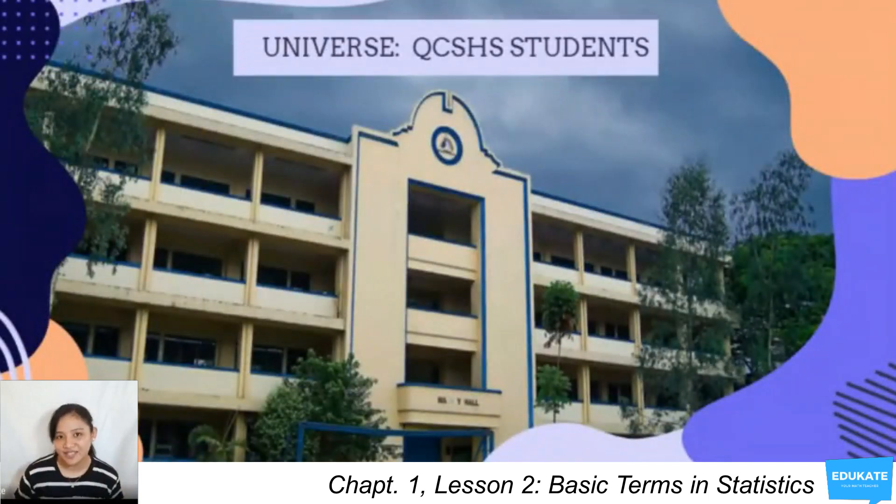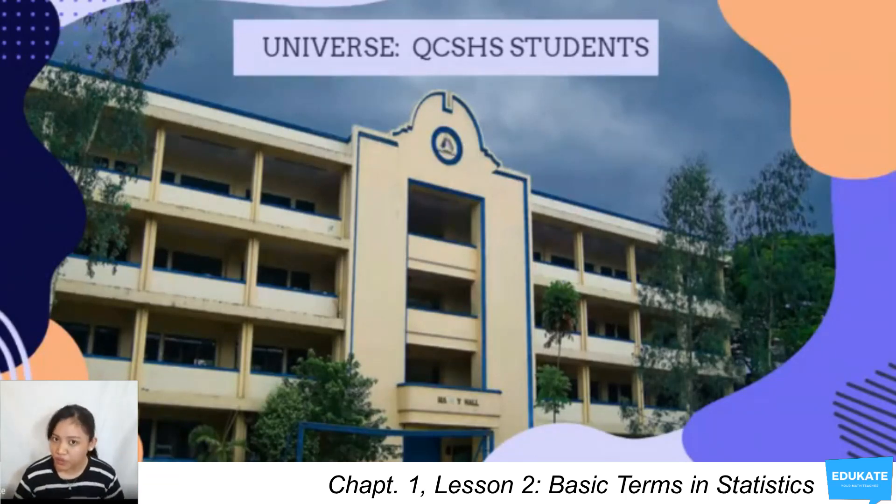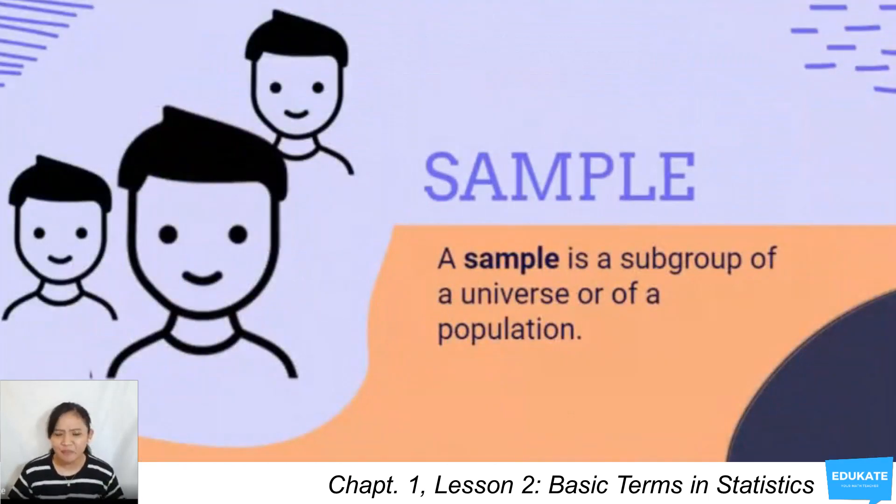Now, male and female can be referred to as the set for the variable sex. How about in a greater scale? For example, in the whole universe of Quezon City Science High School students, the grade 11 students is a subgroup. Now, this subgroup is what we call a sample. What is a sample? A sample is a subgroup of a universe or of a population.